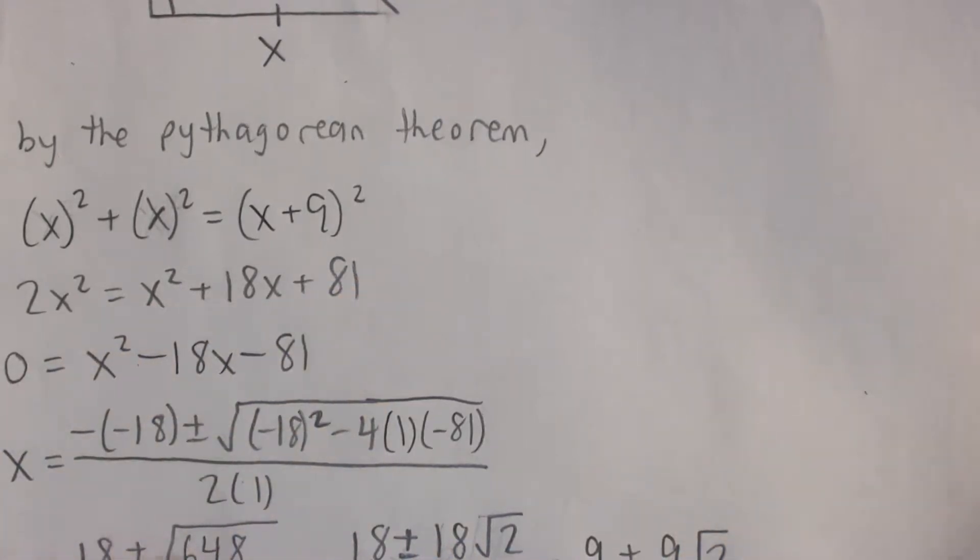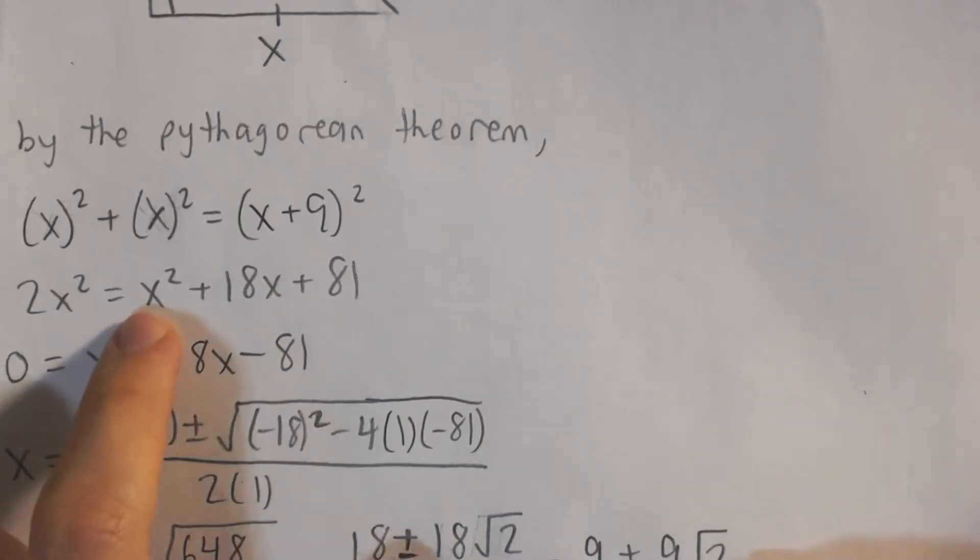Now we have a quadratic equation, which we can solve for x. So I'm going to move all the terms to the left side, and I switch the sides. So I subtracted x squared to get x squared on the left, but I flip the sides. Then I have negative 18x and then negative 81, because I moved all those to the left.